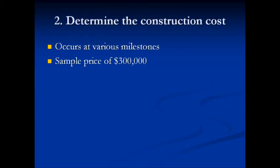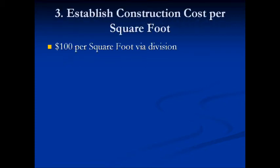Next, you determine the construction costs. And like I said, again, you're going to be getting estimates from general contractors at the milestones. So let's say you end up with an average price of about $300,000 for determining the construction costs. Well, we keep on going. And from there, you divide the $300,000 by the 3,000 square feet. And you end up with a construction cost per square foot, which is a hundred dollars by way of a simple division.